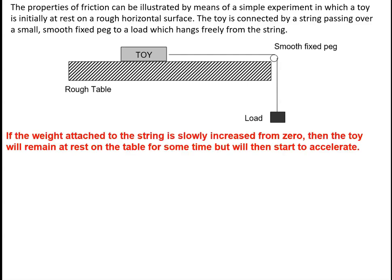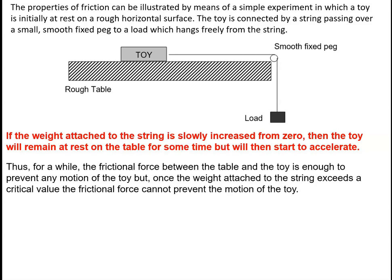If the weight attached to the string is slowly increased from zero, then to begin with, the toy will remain at rest on the table. But when the load gets sufficiently large, the toy will start to accelerate. Thus, for a while, the frictional force between the table and the toy is enough to prevent any motion. But once the weight attached to the string exceeds a certain critical value, the frictional force cannot prevent the motion of the toy.